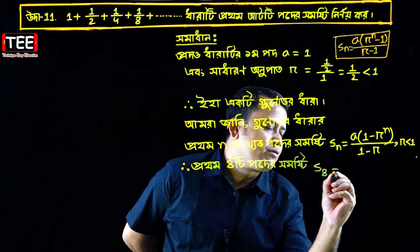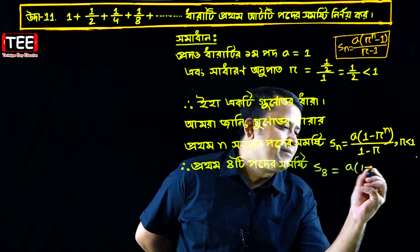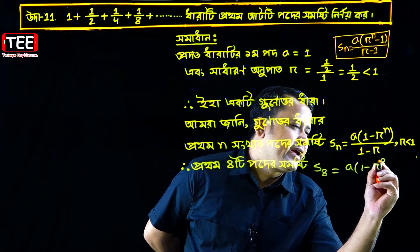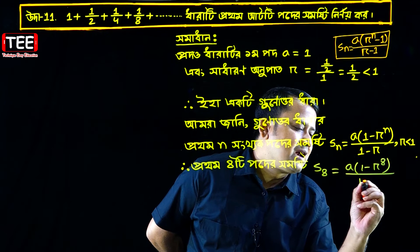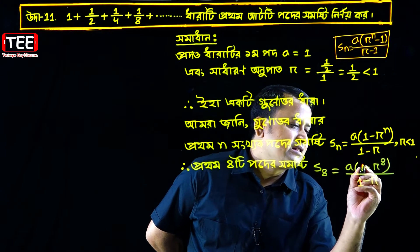The formula equals a times 1 minus r to the power 8, divided by 1 minus r.